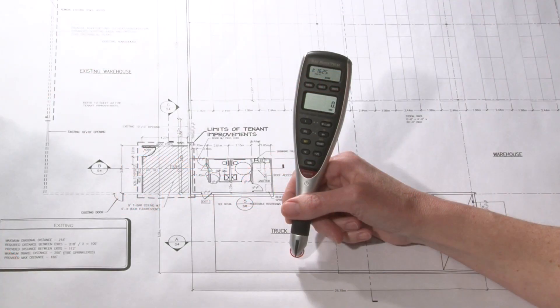Now let me show you how to do a linear area and volume takeoff with your ScaleMaster Pro XE. First, you want to check the scale of your plans. Ours is 1 to 100.